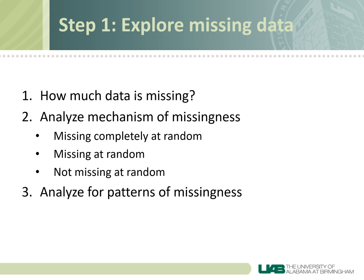The third thing you want to do is analyze the pattern of missingness using the missing value patterns chart, which I'll show you an example of on the next slide. This is done to help you choose a method of imputation. There are two patterns you can see: a monotone pattern where data is missing systematically, where all the missing and non-missing cells are touching; or an arbitrary pattern where data is missing at random, and on the chart you'll see clumps or islands of missing and non-missing cells.